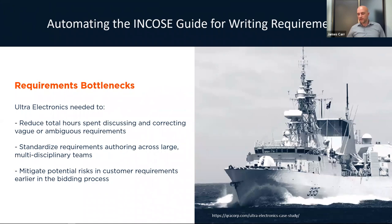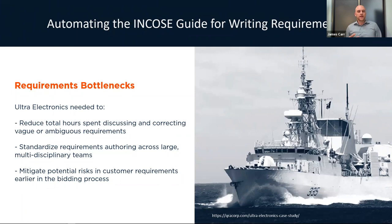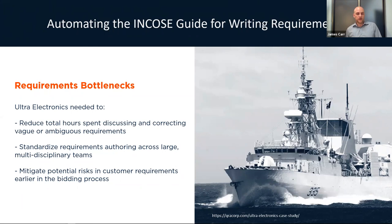We have a case study for a company we work with called Ultra Electronics. They came to us with three goals: to reduce the total hours spent discussing and correcting vague and ambiguous requirements; to standardize the requirements process across large multi-disciplinary teams — they are an ISO 9000 compliant company; and to mitigate potential risks in their customer requirements earlier in the bidding process. If you can use an automated tool to point out areas of requirements that are vague or difficult to track, it makes a big difference in your ability to move forward confidently from the get-go.